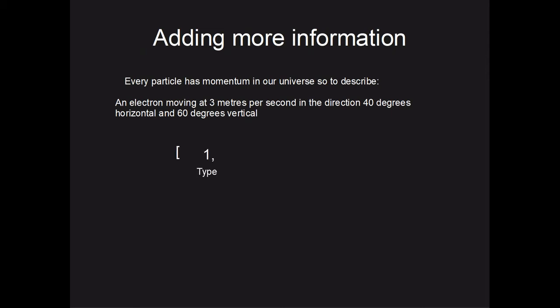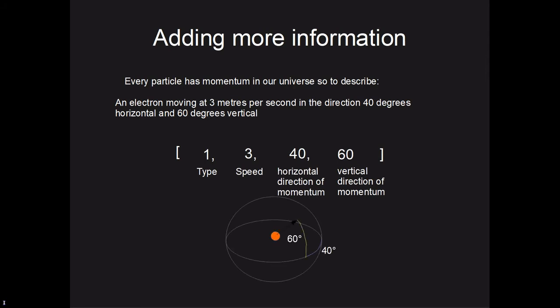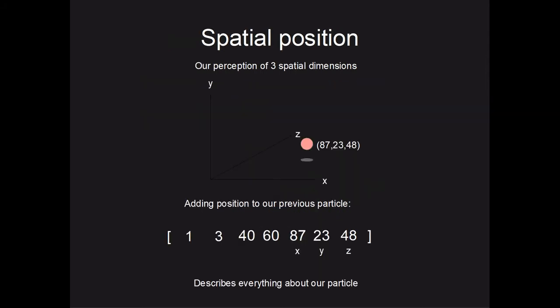So an electron moving at 3 meters per second in the horizontal direction of 40 degrees and the vertical direction of 60 degrees is displayed as 1, 3, 40, 60 — where the first value is the type of particle, the second is the speed, the third is the horizontal direction, and the fourth is the vertical direction. Because particles also have positions in the universe, we can attach the position to this array of numbers.